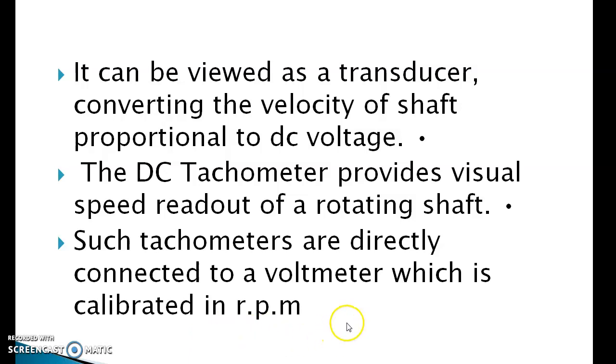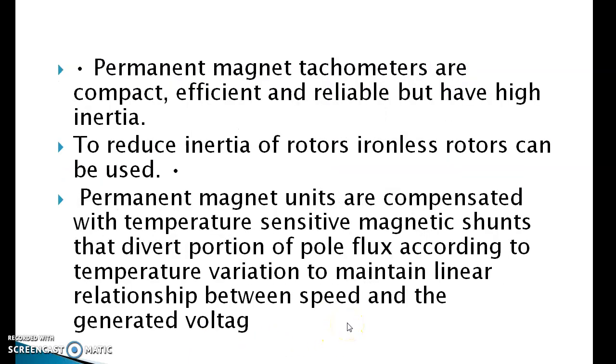It can be viewed as a transducer converting the velocity of shaft proportional to DC voltage. The DC tachometer provides visual speed readout of a rotating shaft. Such tachometers are directly connected to a voltmeter which is calibrated in revolution per minute or rpm. Permanent magnet tachometers are compact, efficient and reliable but have high inertia due to inertia of rotor. Ironless rotors can be used. Permanent magnet units are compensated with temperature sensitive magnetic shunts that divert portion of the pole flux according to temperature variations to maintain linear relationship between the speed and the generator voltage.